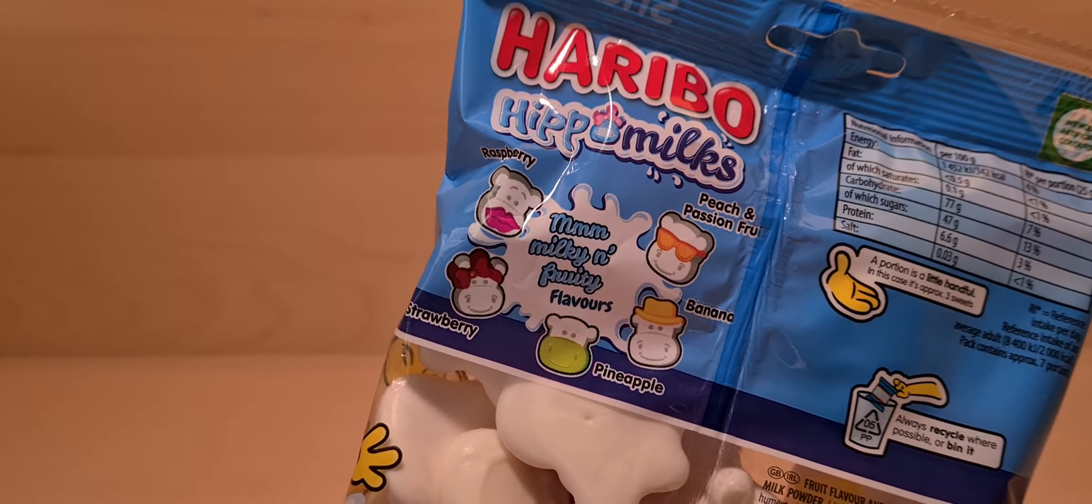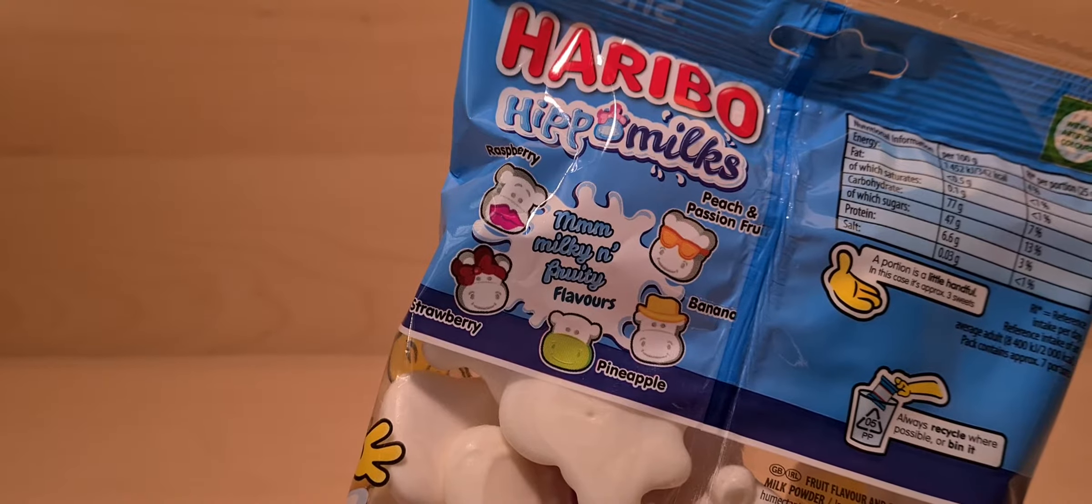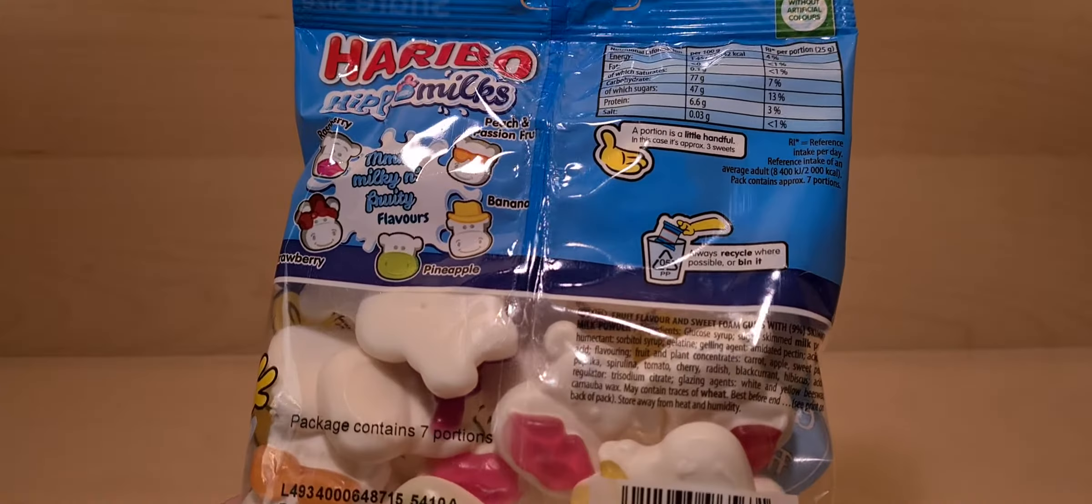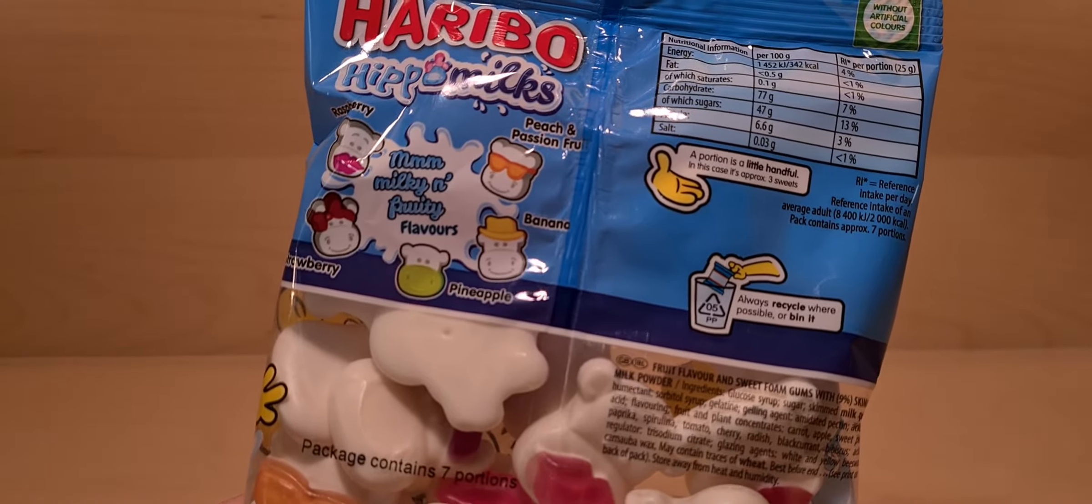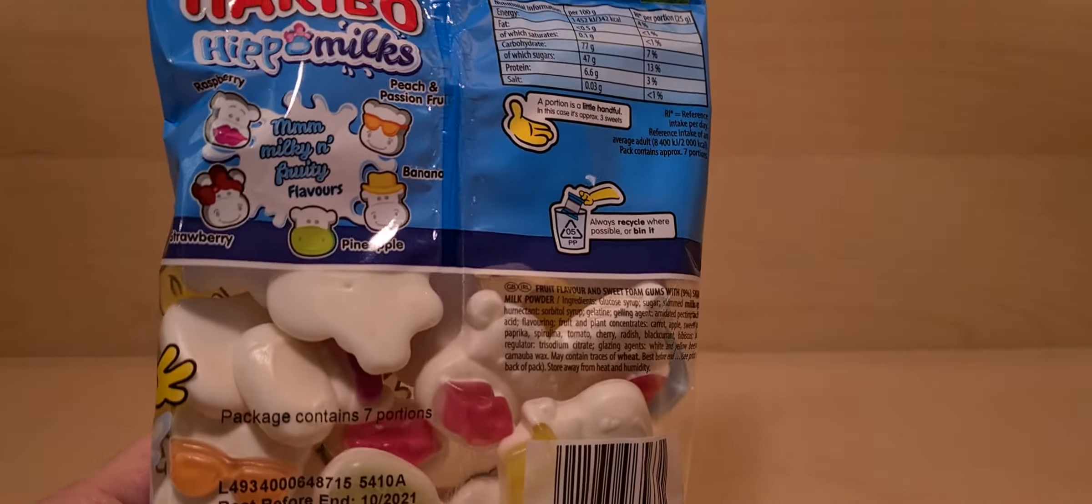So one's got lips, one's got a headdress, one's its muzzle, one's a hat, one's sunglasses. And a portion is, in this case, approximately three sweets.